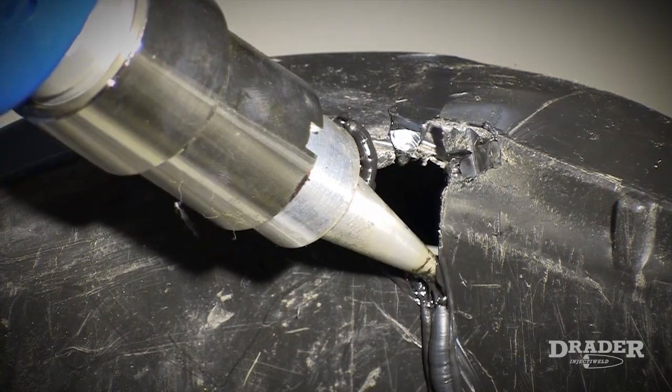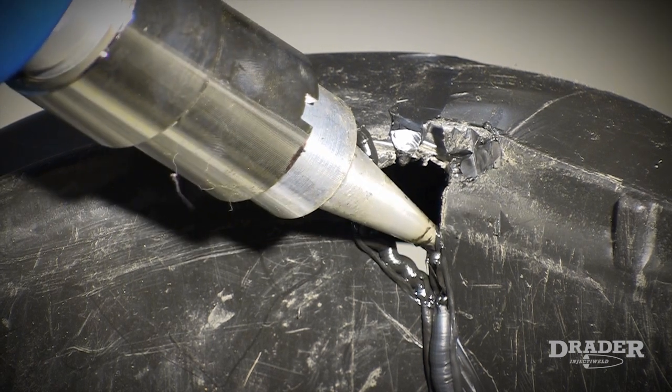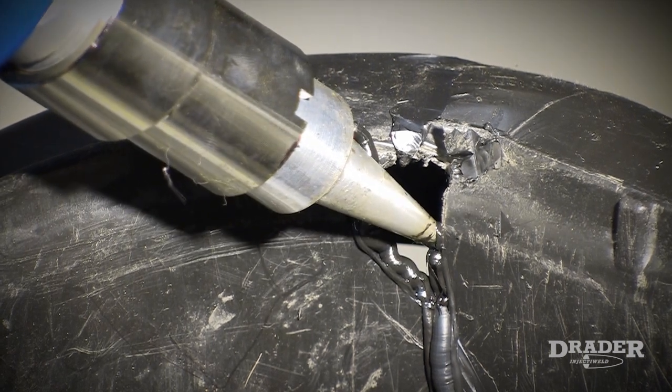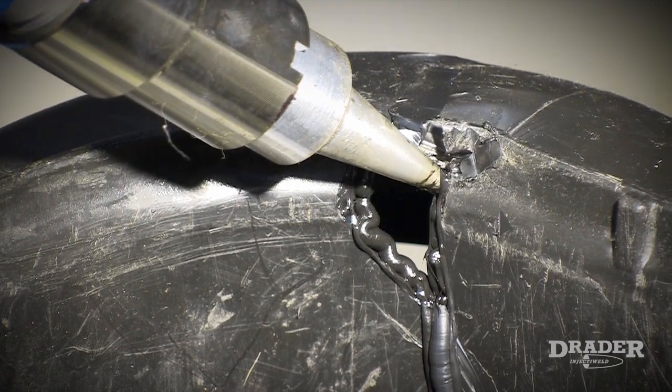The trick to making effective plastic patches with the injector weld is to make sure the tip comes into contact with at least some part of the parent material. Remember, one has to achieve a melt in order to get a high quality weld.